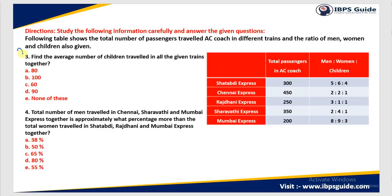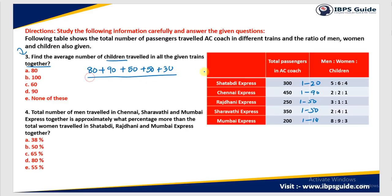Question 3: Find the average number of children traveling in all the given trains together. One part values: Satabdi=20, Chennai=90, Rajdhani=50, Saravati=50, Mumbai=10. Children parts: Satabdi=4 parts=80; Chennai=1 part=90; Rajdhani=1 part=50; Saravati=1 part=50; Mumbai=3 parts=30. After simplifying by dividing by 10: 8+9+5+5+3=30, then 170 divided by 5. Computing: 34 plus 20 = 54 plus 6 = 60. So the answer is Option C.